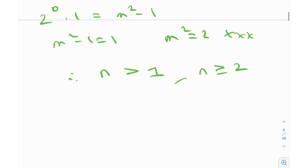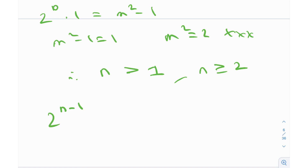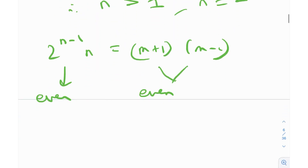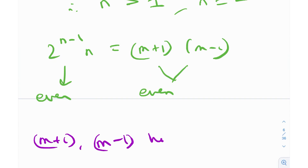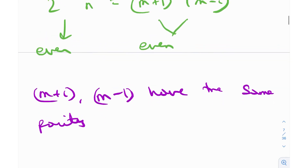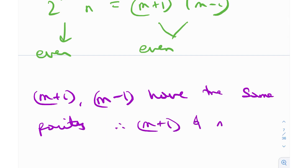Now, if we notice the left-hand side: 2 raised to n minus 1 times n equals (m+1)(m−1). The left-hand side is always even for all n greater than 1, because we have this power of 2. So this entire quantity also needs to be even. Now, m minus 1 and m plus 1 both have the same parity — either both odd or both even. Parity is essentially the oddness or evenness of a number. We want their product to be even, so m plus 1 and m minus 1 are both even, which implies m is odd.